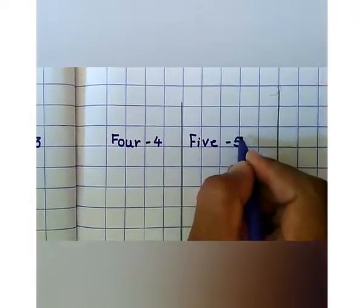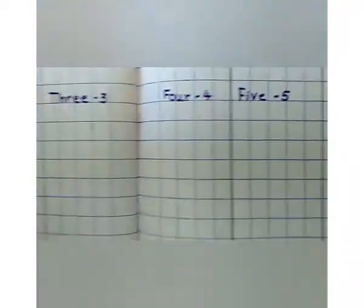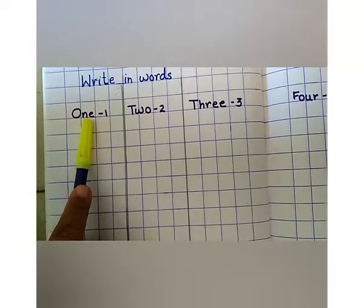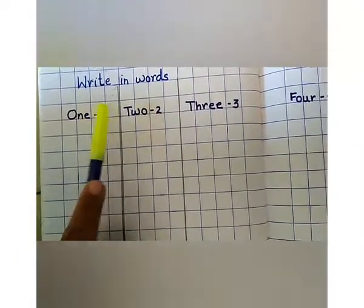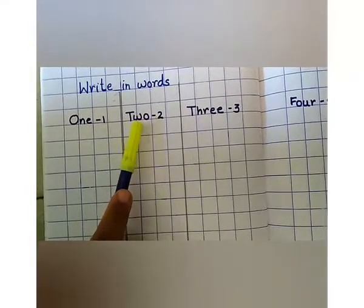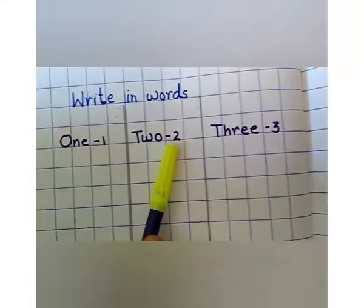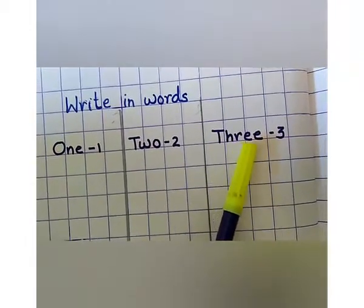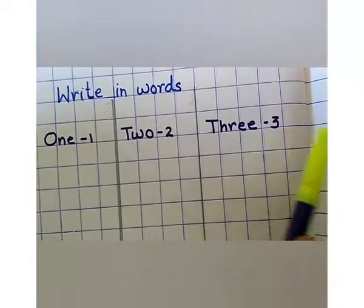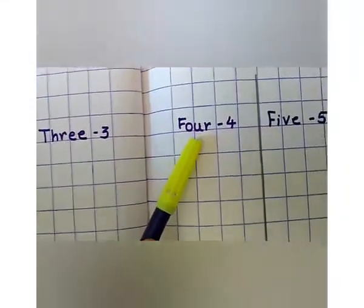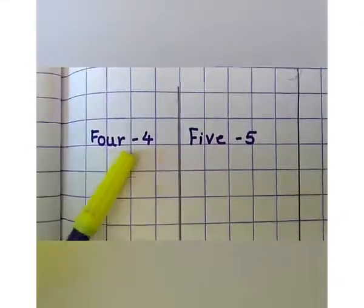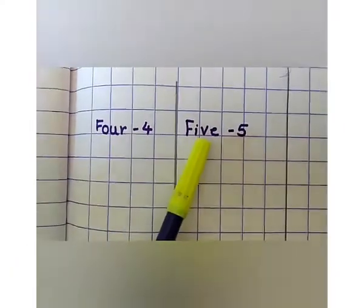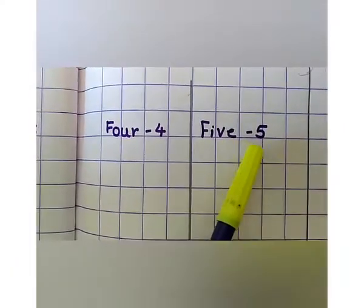Once again, we will write. Repeat the spellings. O, N, E — one. T, W, O — two. T, H, R, double E — three. F, O, U, R — four. F, I, V, E — five.